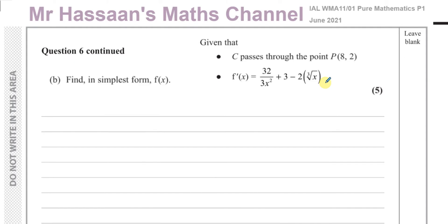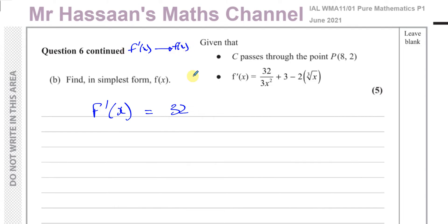For part b, we need to find f(x) in simplest form. Since we have the gradient function, we integrate it to find the original function. I'll rewrite it in index form with x on the numerator to make integration easier: 32x^(−2) + 3 − 2x^(1/3).